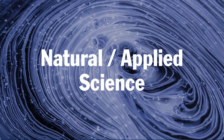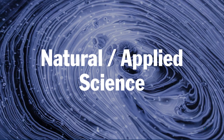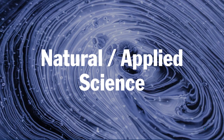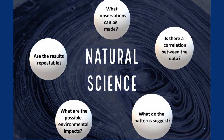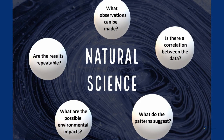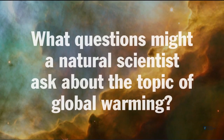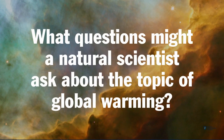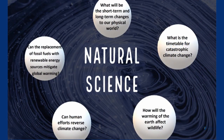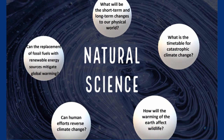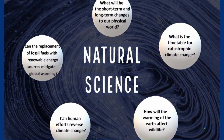Natural and applied sciences like chemistry, biology, and physics use a specific process for observing, describing, and making predictions in the natural world. Natural scientists are driven by observations, correlations, patterns, and data. Consider pausing the video and writing down a few questions a natural scientist might ask about global warming. Questions from the natural science perspective might include: can human efforts reverse climate change, or how will the warming of the earth affect wildlife?